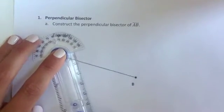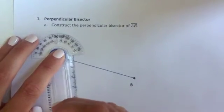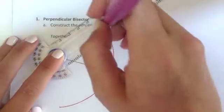The next step is to swing an arc above and below the line segment. So I need to swing way down and swing way up.